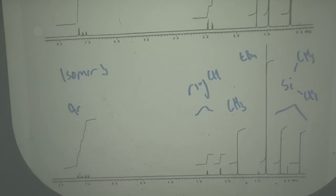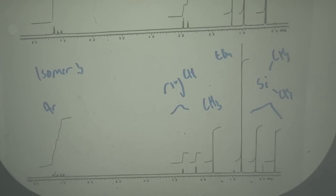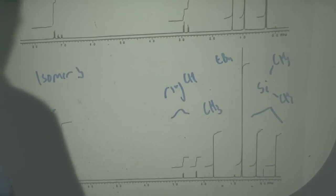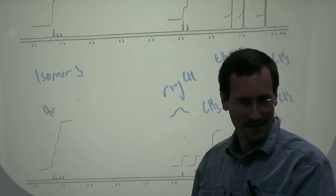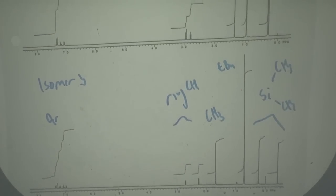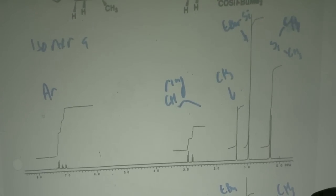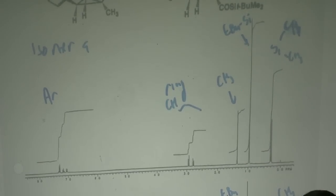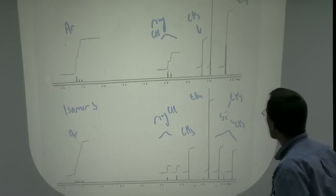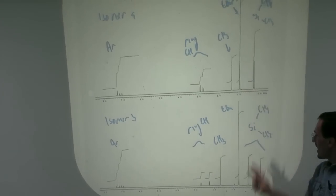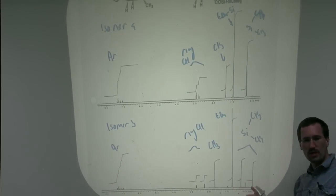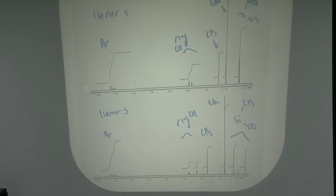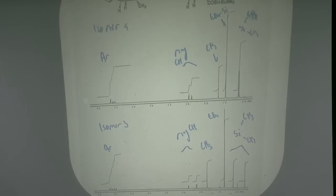Why do we get two peaks for the two methyls on silicon? They are diastereotopic — when you have any stereocenter in a molecule and a carbon bearing two identical substituents like two methyls, those substituents are diastereotopic and topologically different from each other. In one case they show up at similar chemical shifts; in another case they show a high degree of magnetic anisotropy — a large difference in chemical shift. This is an example where the NOE really shines.